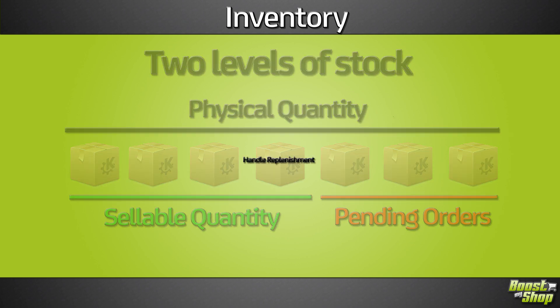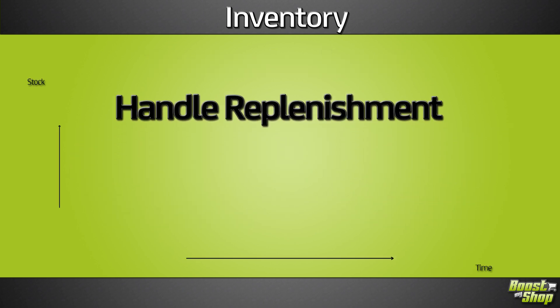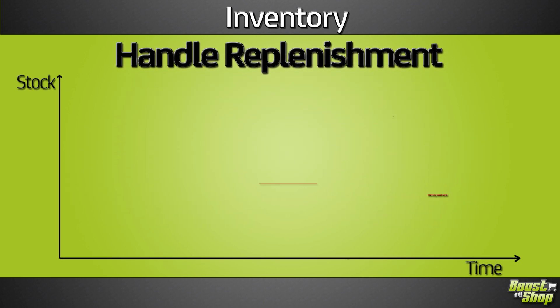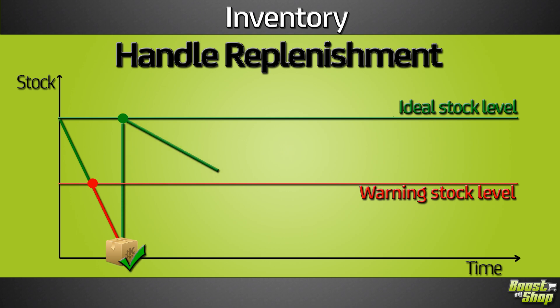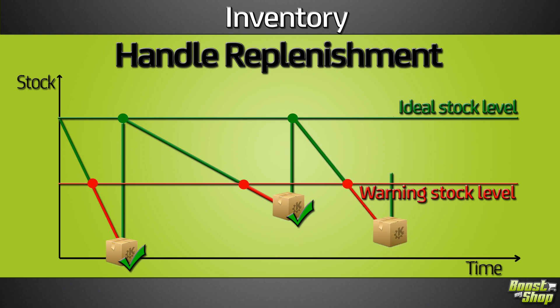To efficiently manage replenishment, MBDDRP can handle a warning level and an ideal stock level for each product. Each time the product stock level reaches the warning limit, a purchasing recommendation is created to ask you to purchase the required quantity to reach the ideal stock level. Warning and ideal stock levels can be automatically calculated based on your sales history.